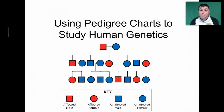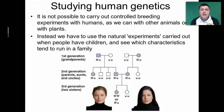Hello and welcome to BioLessons To Go. I'm Mr. Dove and this is Using Pedigree Charts to Study Human Genetics. In order to study human genetics, it's not possible to carry out a controlled breeding experiment with humans as we do with animals, or as for example when Mendel controlled the breeding of his pea plants.